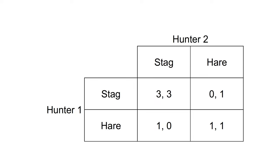Consider the stag hunt game between two players deciding what animal they will hunt. Both hunters need to cooperate to catch the stag. They can catch a hare by themselves, but it provides less meat. What are the Nash Equilibria?